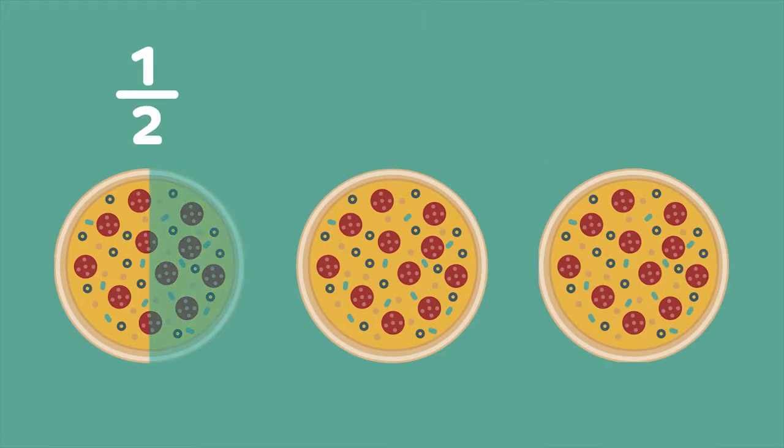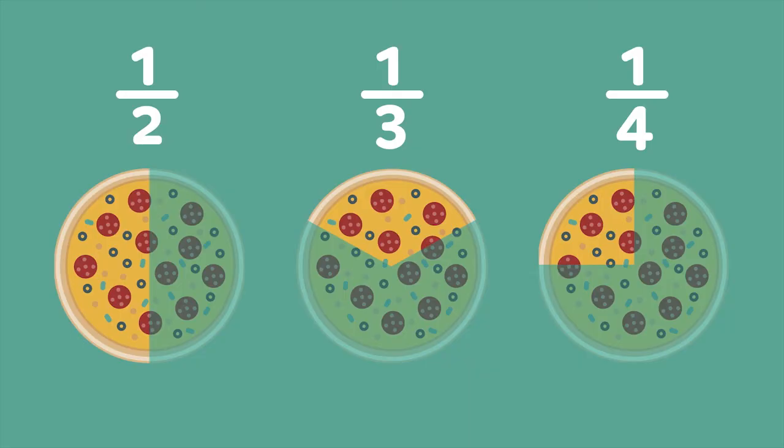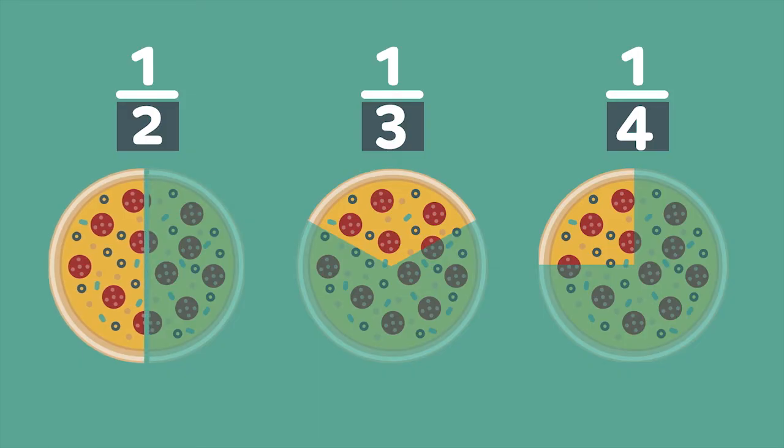One half of this pizza is highlighted. One third of this pizza is highlighted. One fourth of this pizza is highlighted. What do you notice? As the denominator gets bigger, it represents a smaller part of the pizza. One half of an object is a bigger portion than one fourth of the same object.